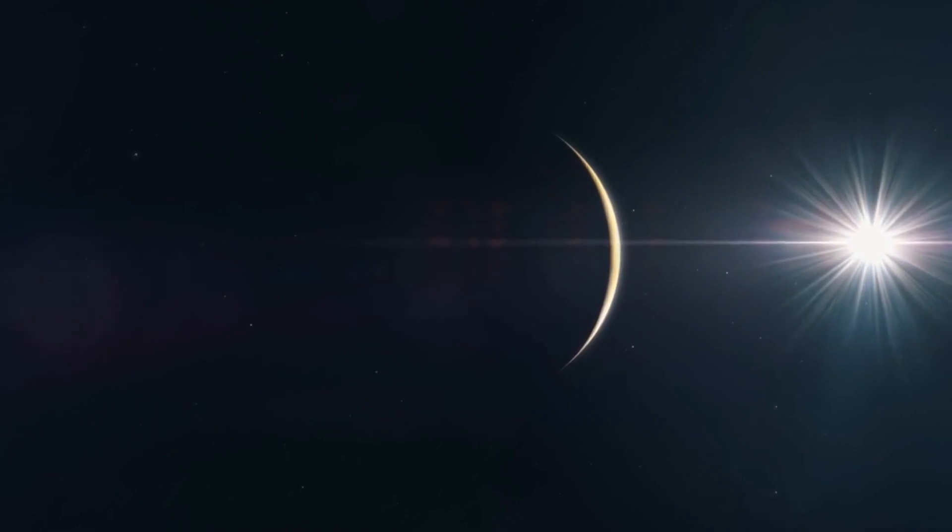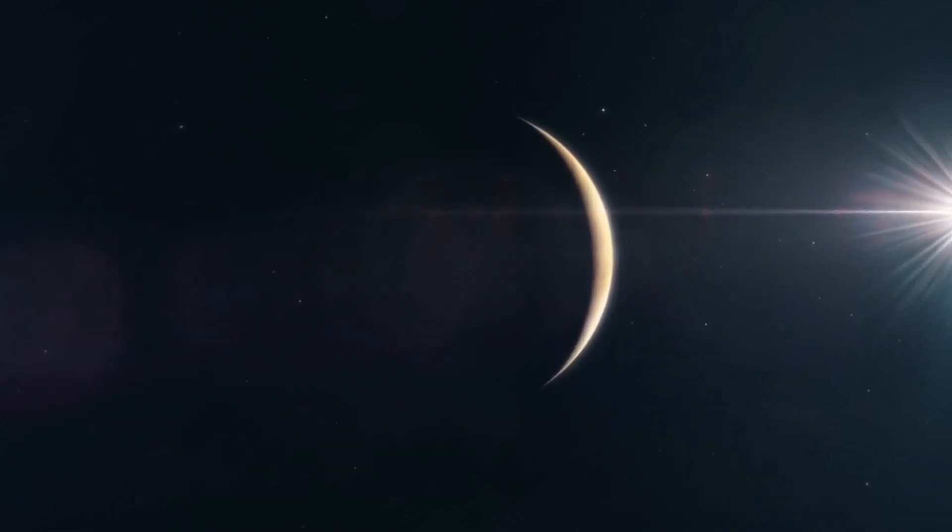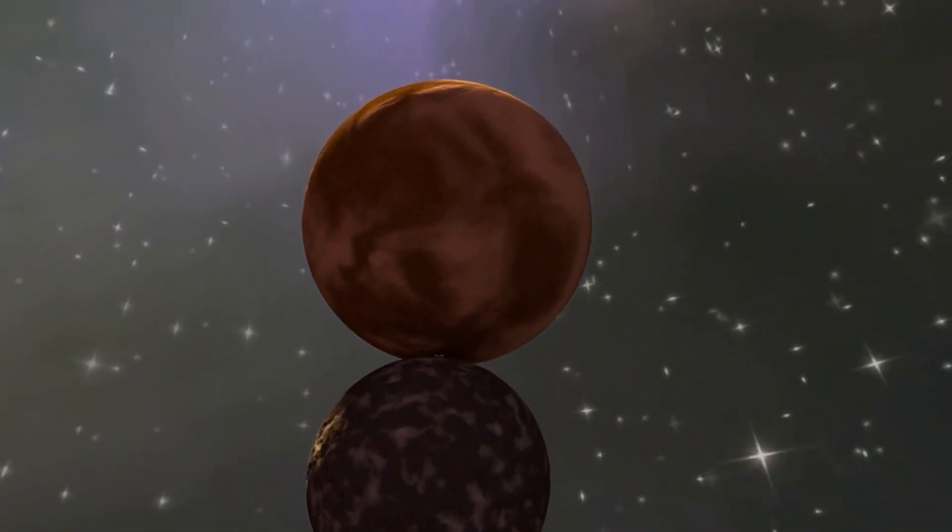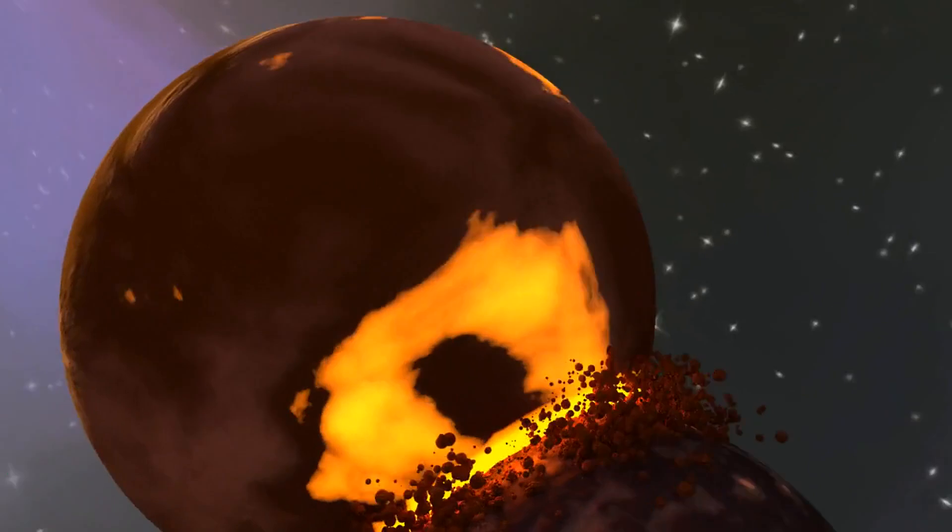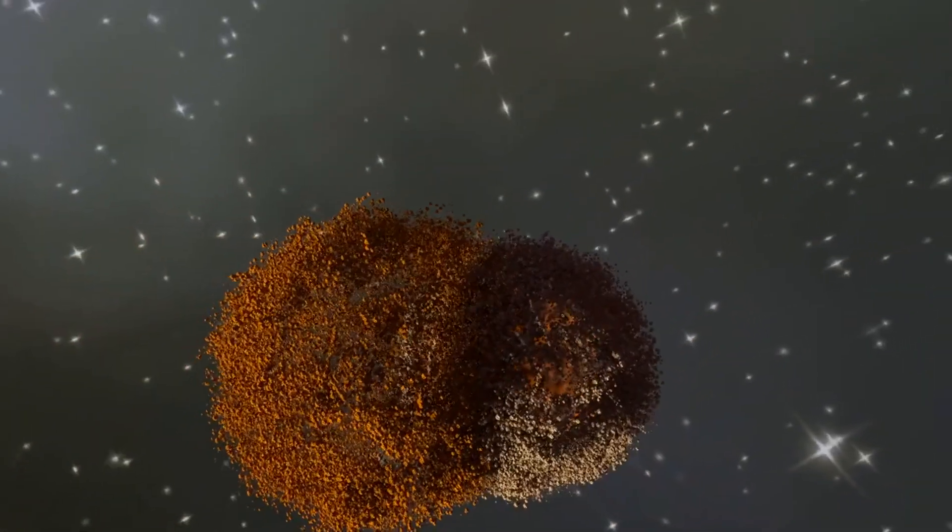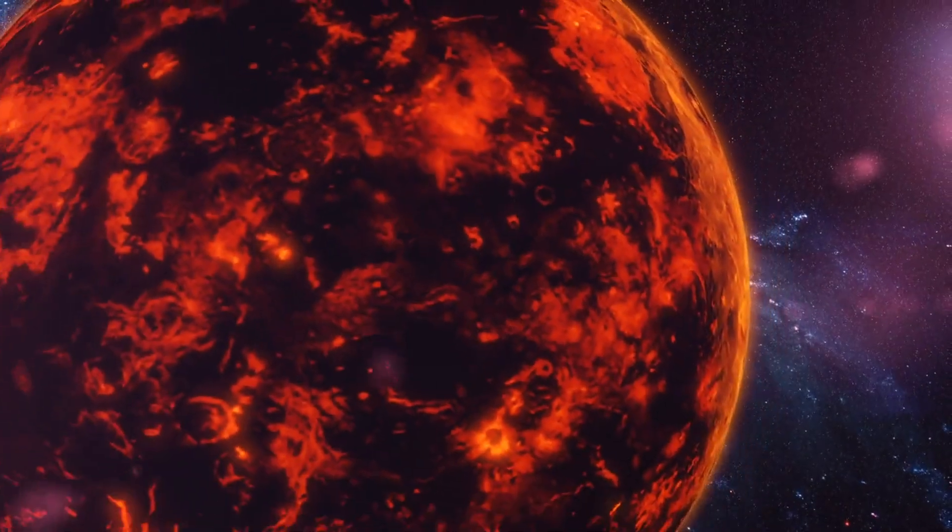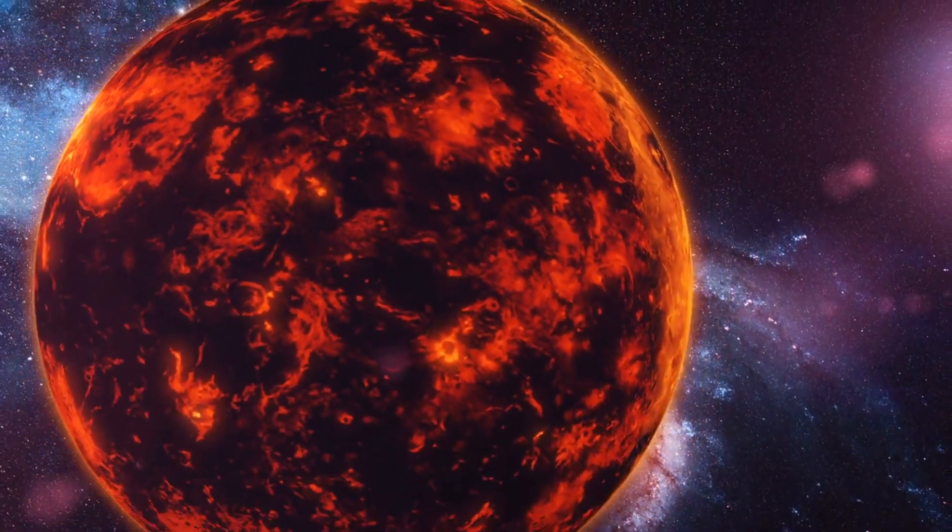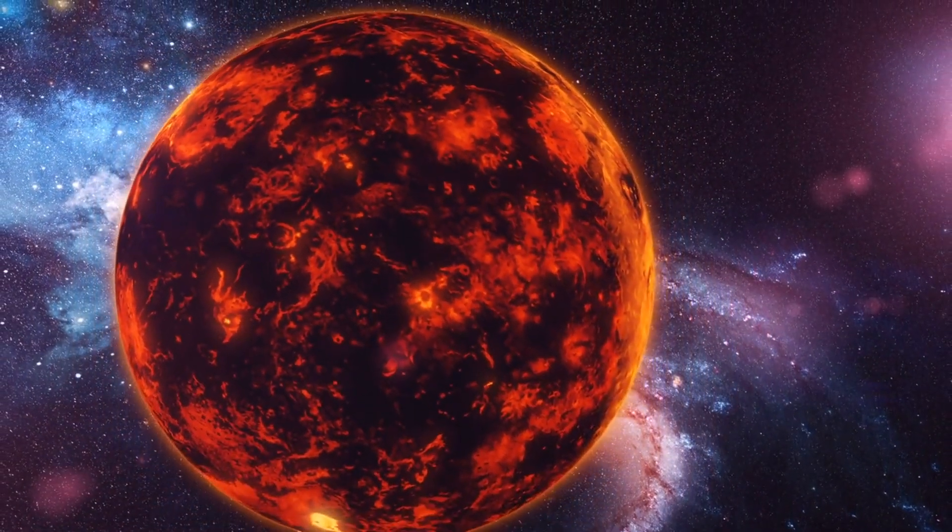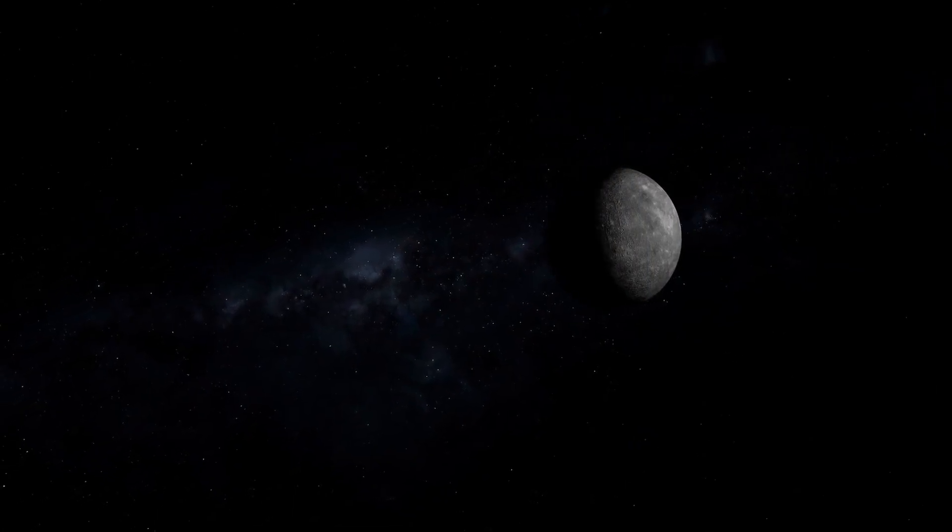Mercury's high-speed approach would not just cause a simple impact. The collision would create an explosion of unimaginable scale, hurling debris into space. The fragments of the two planets would scatter, potentially forming new rings of debris around Venus or even triggering the birth of new moons.